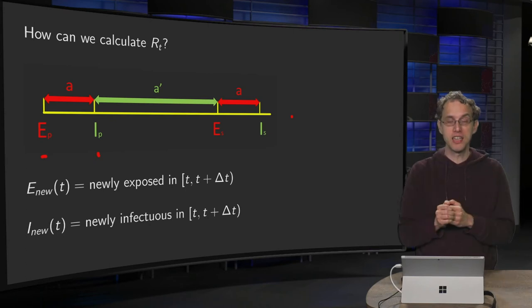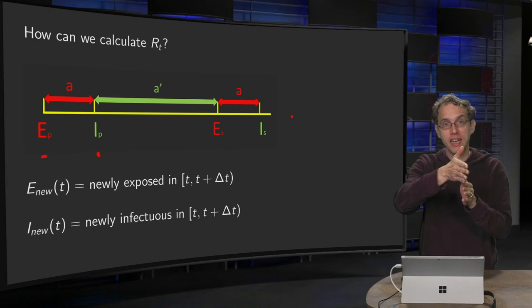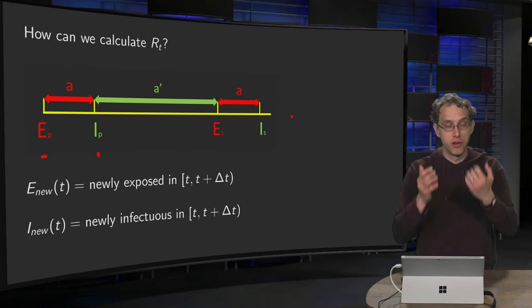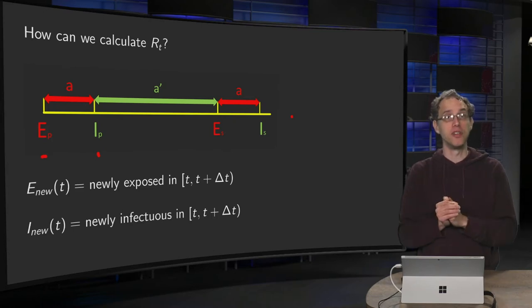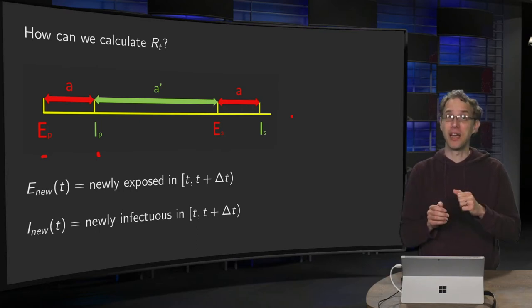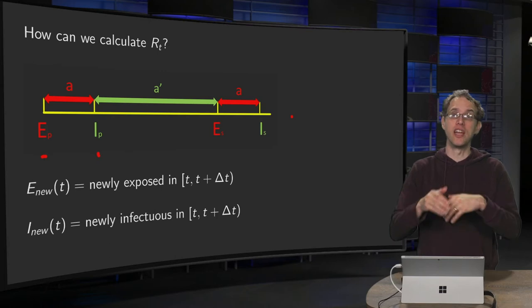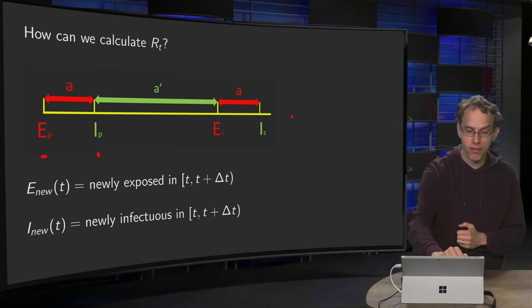So that will be some days, it will take say eight days to move from the E to the I stage. And a is typically a random variable, so number a can vary a bit, it will be taken from some probability distribution. Then if you are in the I stage, then you can infect other people. It will take some time to infect another individual, say a prime days, over here.